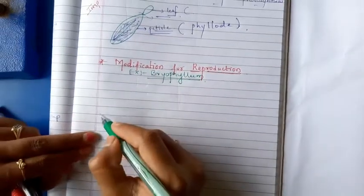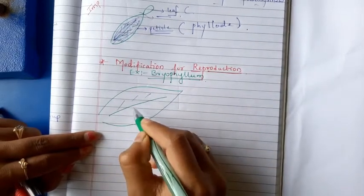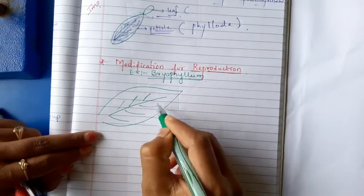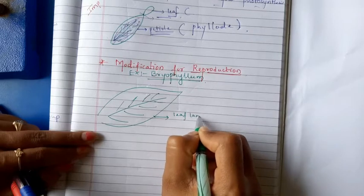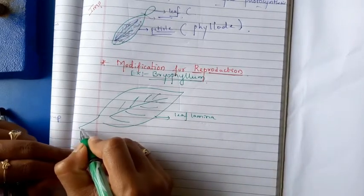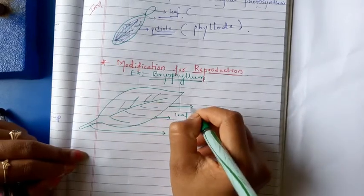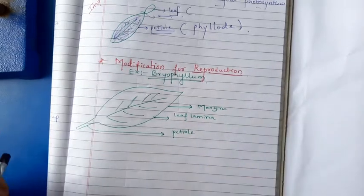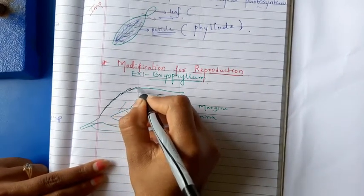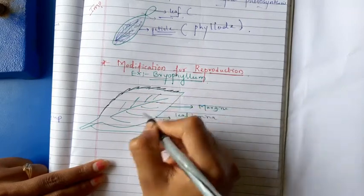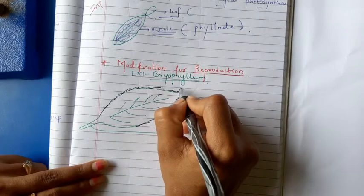In case of Bryophyllum, the margin of the leaf — we already discussed about all the parts of the leaf. What I am drawing now, those are the veins, this is the leaf lamina. The stalk which arises from the leaf is known as a petiole. This is a margin, margin of the leaf. In case of Bryophyllum, the margin of the leaf is not entire — it has some small, small breakouts. On that margin, the small parts arise.